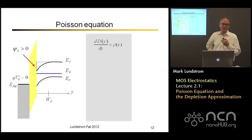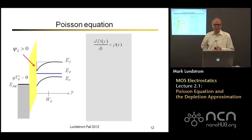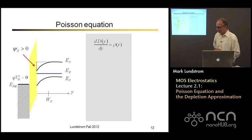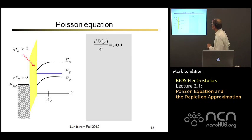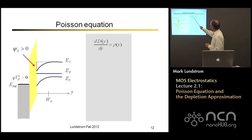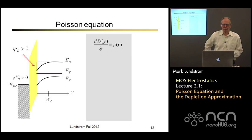We'd like to solve this problem and understand things like the electric field and how the bands are bending spatially. To do that, we solve the Poisson equation. The way I remember it first is divergence D is equal to rho, where rho is the charge density in coulombs per cubic centimeter, and D is the electric displacement field. In 1D, divergence is the derivative with respect to y, our one dimension over which things are varying.